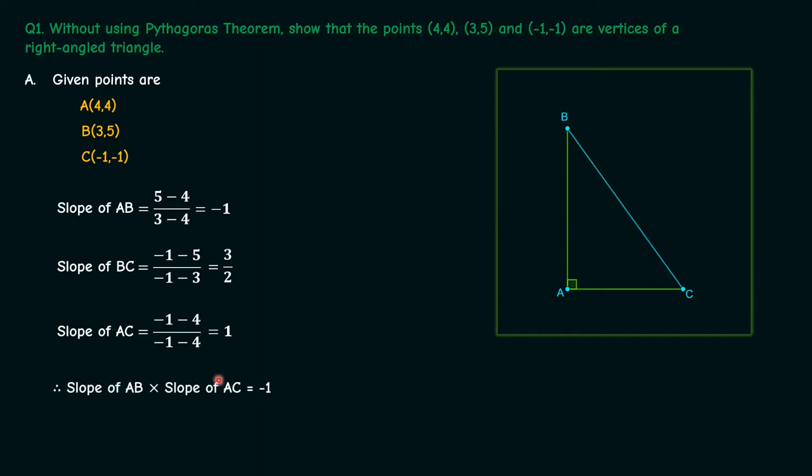The product of this is equal to minus 1. So therefore we can say that angle A is 90 degrees, which proves that the given points form a right angle triangle.